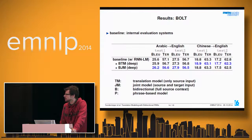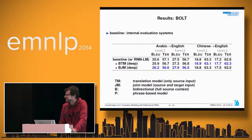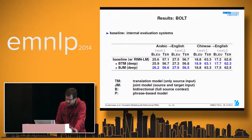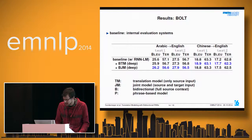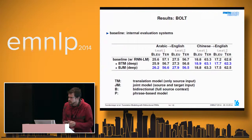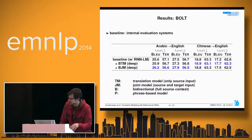Asked why the bidirectional joint model works better on one task while the translation model works better on another, the presenter explained that the BTM generally works slightly better than the joint model, possibly because a recurrent language model already captures target history. For Arabic-English, the system already uses a sentence-wide IBM Model 1, providing full source information, which may explain why the translation model gives smaller gains there.